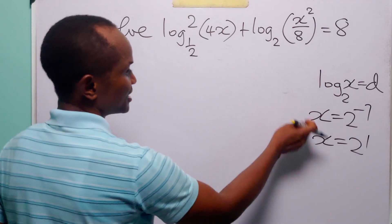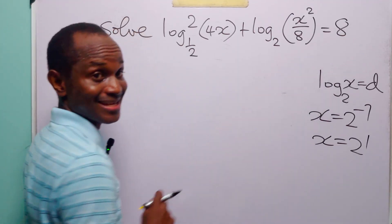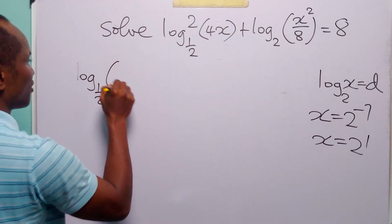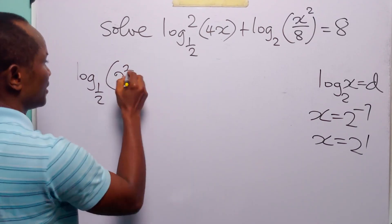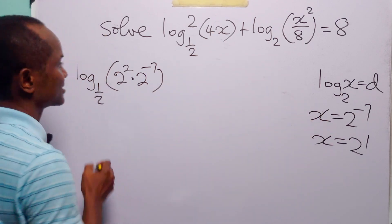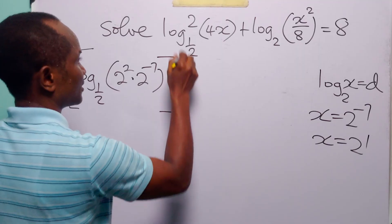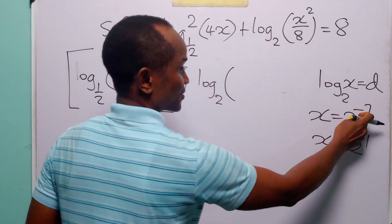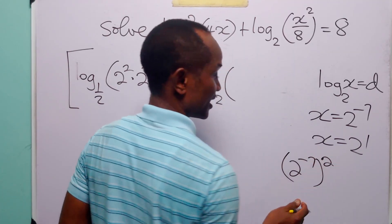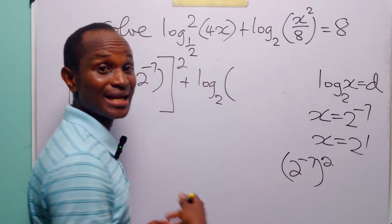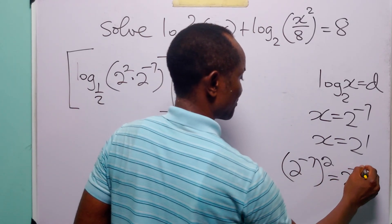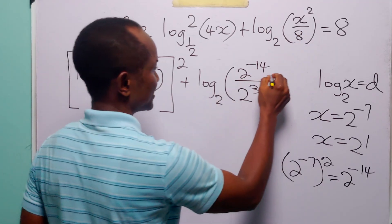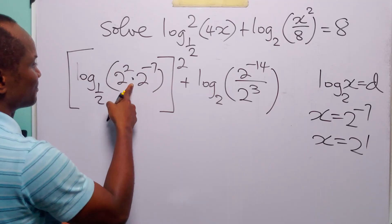To check our answer, let us substitute these two values of x into the left-hand side of the equation. When x equals 2 to the power minus 7, this equation becomes log to base one-half of (2 squared times 2 to the power minus 7), all squared, plus log to base 2 of (2 squared times 2 to the power minus 7) squared over 8. Now 2 squared times 2 to the power minus 7: when we have two numbers with the same base multiplying, we add the exponents, giving 2 to the power minus 5.